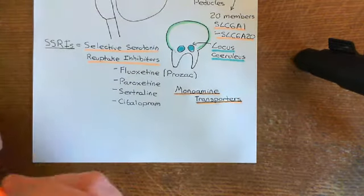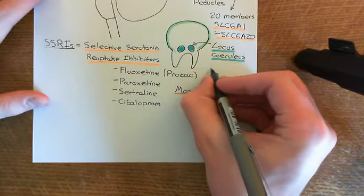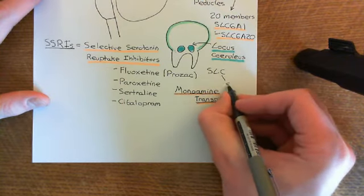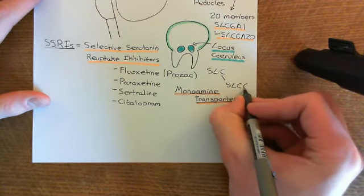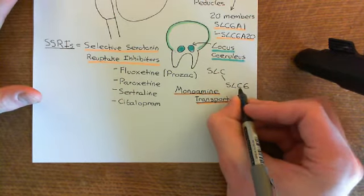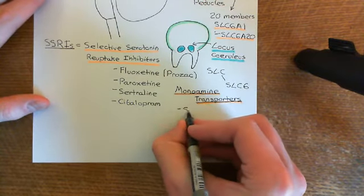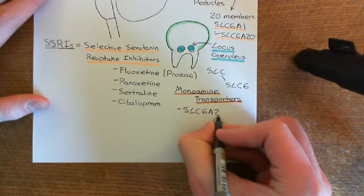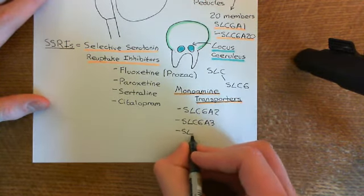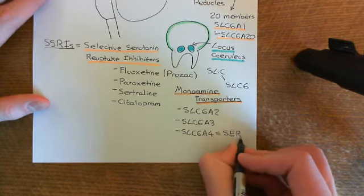So the monoamine transporters - let me stress this clearly. There is this massive family of proteins known as the solute carrier transporters, the SLCs. Within the solute carrier transporters, there is the SLC6 family. Within this SLC6 family, there is then a subfamily which is the monoamine transporters, and this subfamily contains three members: SLC6A2, SLC6A3, and also SLC6A4. We know that SLC6A4 is the serotonin reuptake transporter, or the SERT.